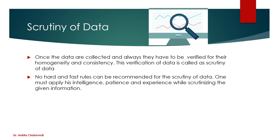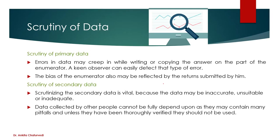We can scrutinize both primary and secondary data. For primary data, when you collect schedules filled by enumerators, it is possible that something is wrong with them, or the enumerators may be biased. So you need to check the enumerators' data and scrutinize your answers properly.